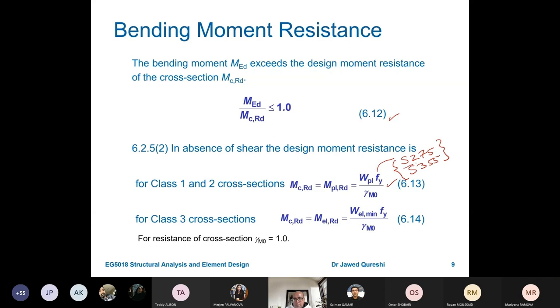We use these two steel grades, but mainly we use S275 for beams. We use S355 for columns. For class 3 sections, we will have M_elastic rather than plastic. So this will change it to W_elastic.